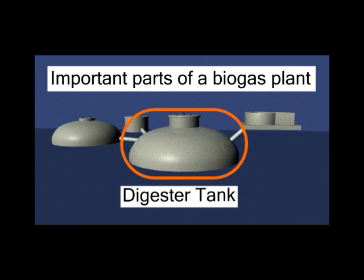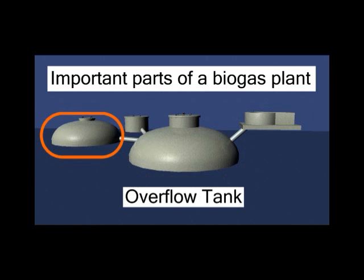The digester tank is where anaerobic digestion, the process which produces biogas, occurs. The overflow tank helps deal with the pressure that occurs in the digester tank as a result of anaerobic digestion. It prevents gas leakages from the increasing pressure inside the digester tank.